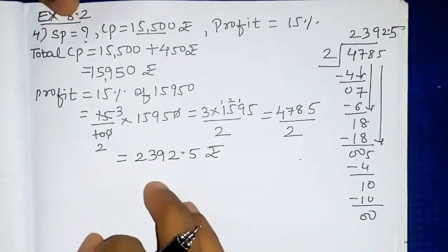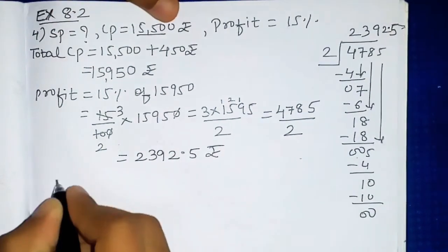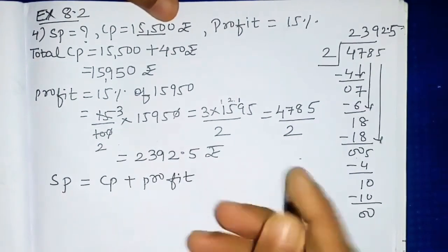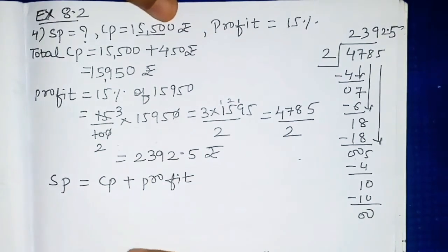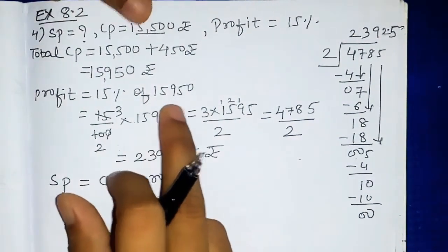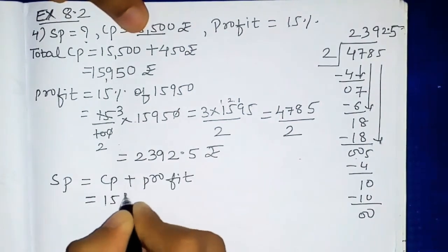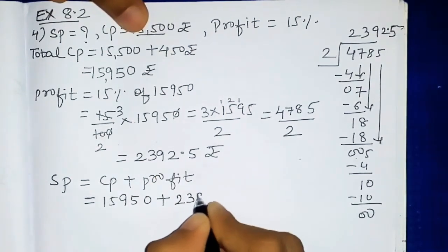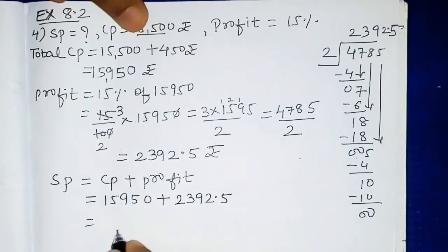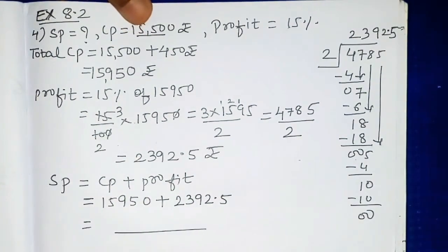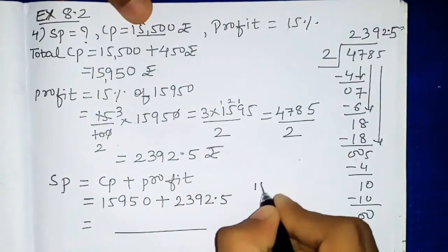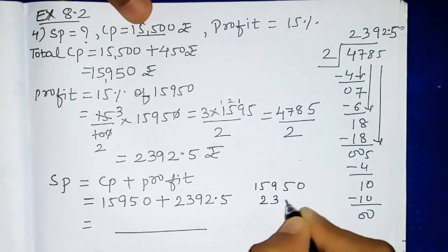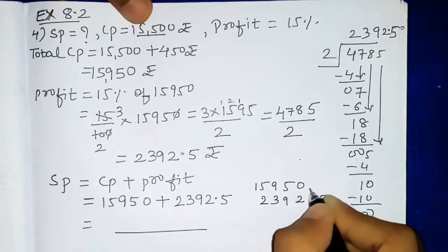Now we have to find the selling price. Selling price equals cost price plus profit. We have the total CP as ₹15,950 and profit as ₹2392.5. We will add both of these to get the selling price. So: 15,950 plus 2392.5.